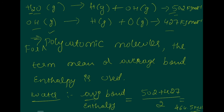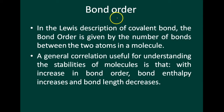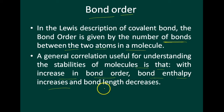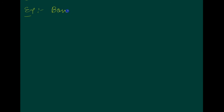The next topic is bond order. In the Lewis description of a covalent bond, bond order is given by the number of bonds between two atoms in a molecule. A general correlation is useful for understanding the stabilities of molecules: with increases in bond order, bond enthalpy increases and bond length decreases.